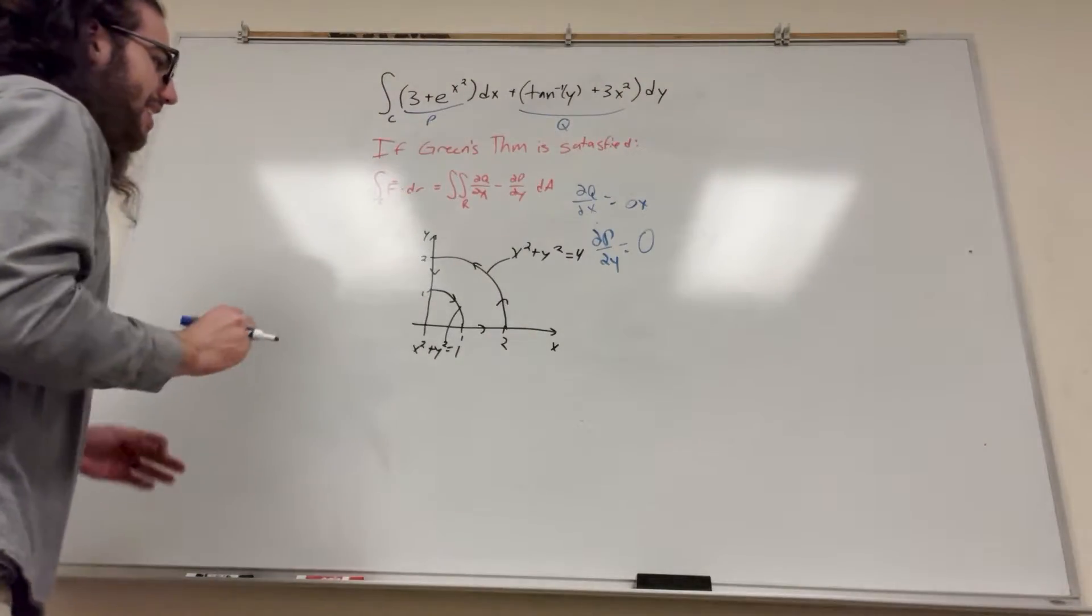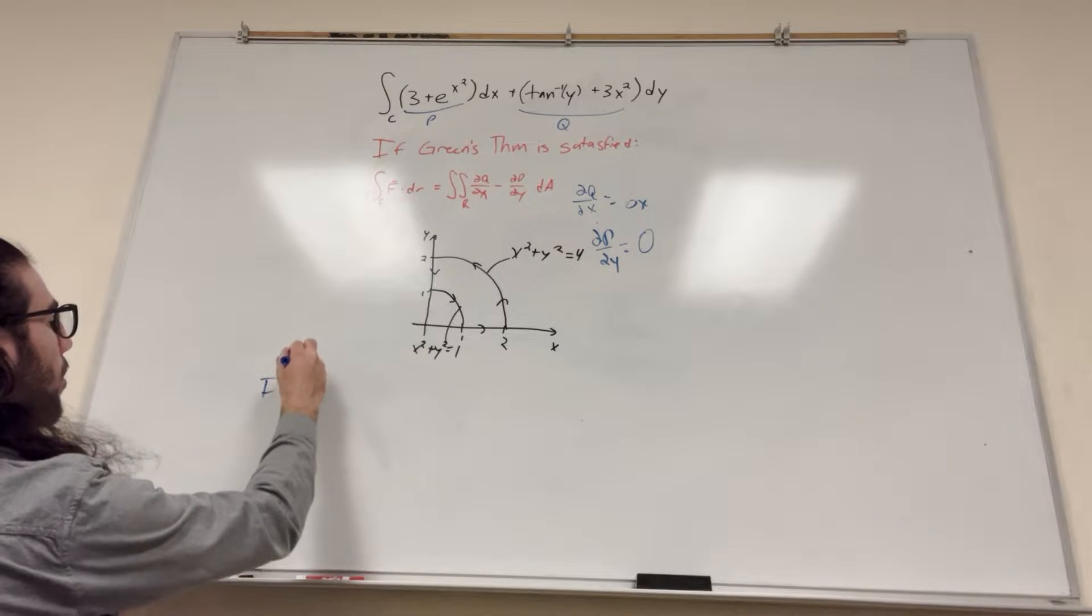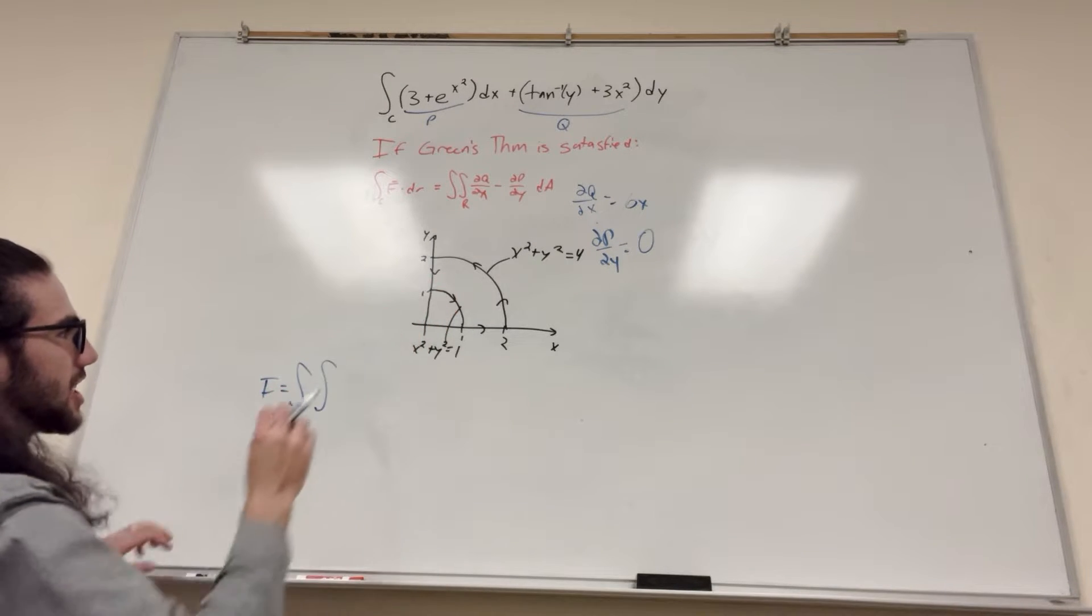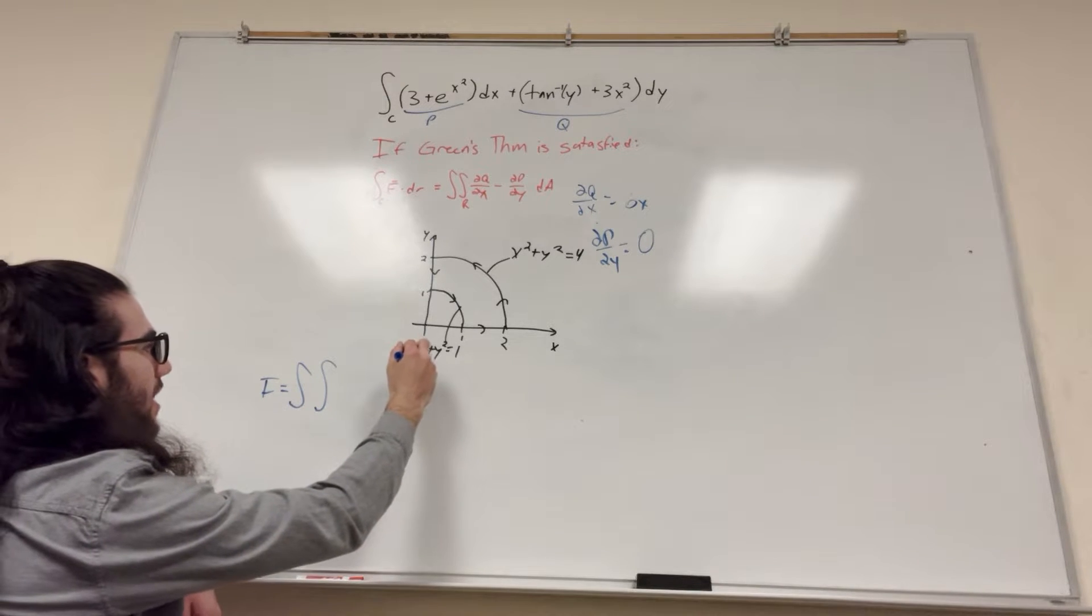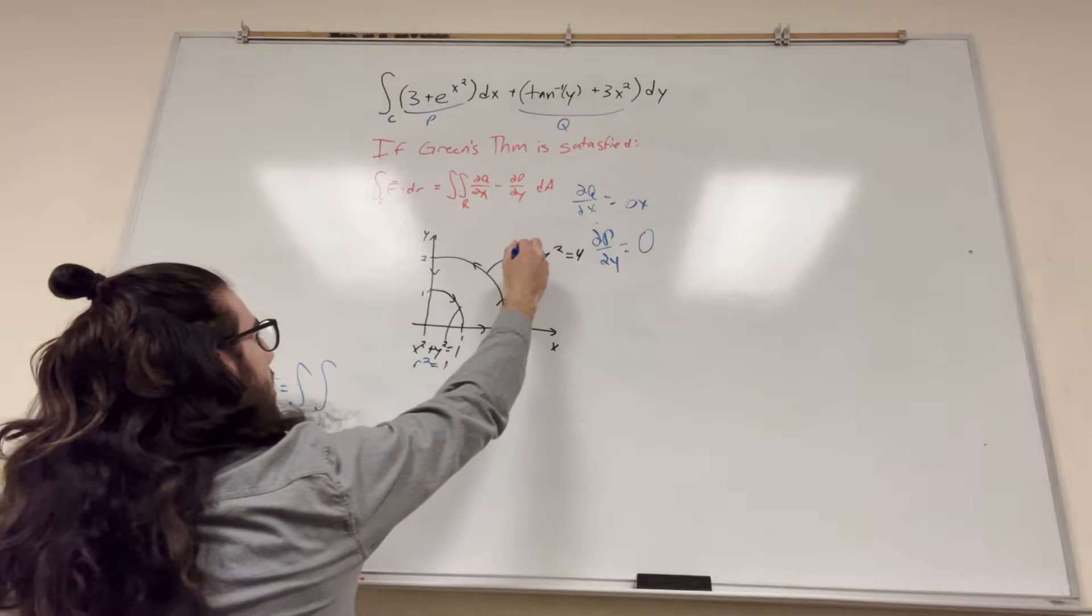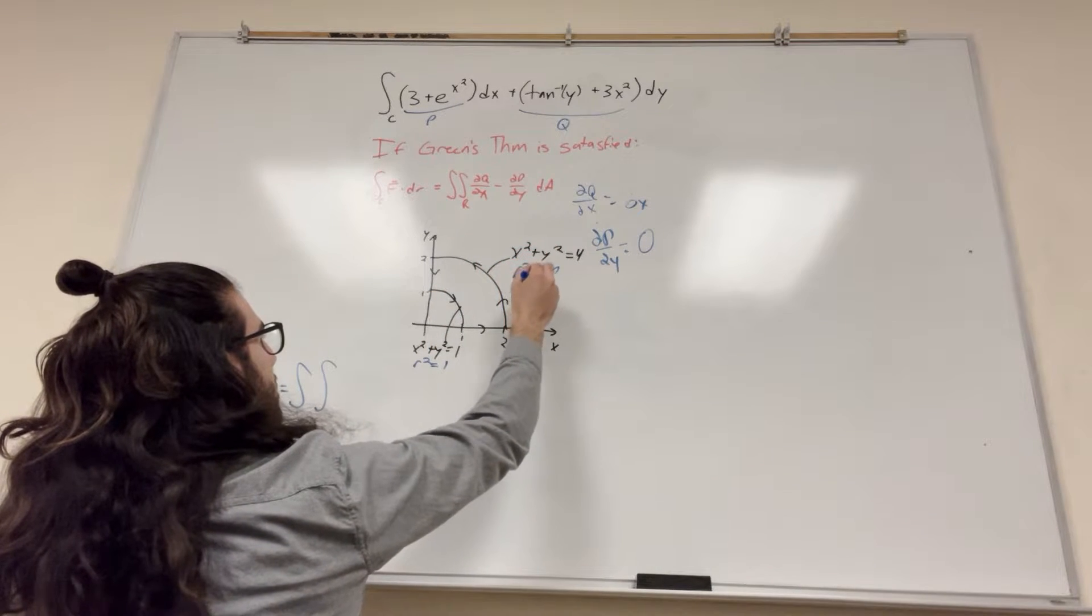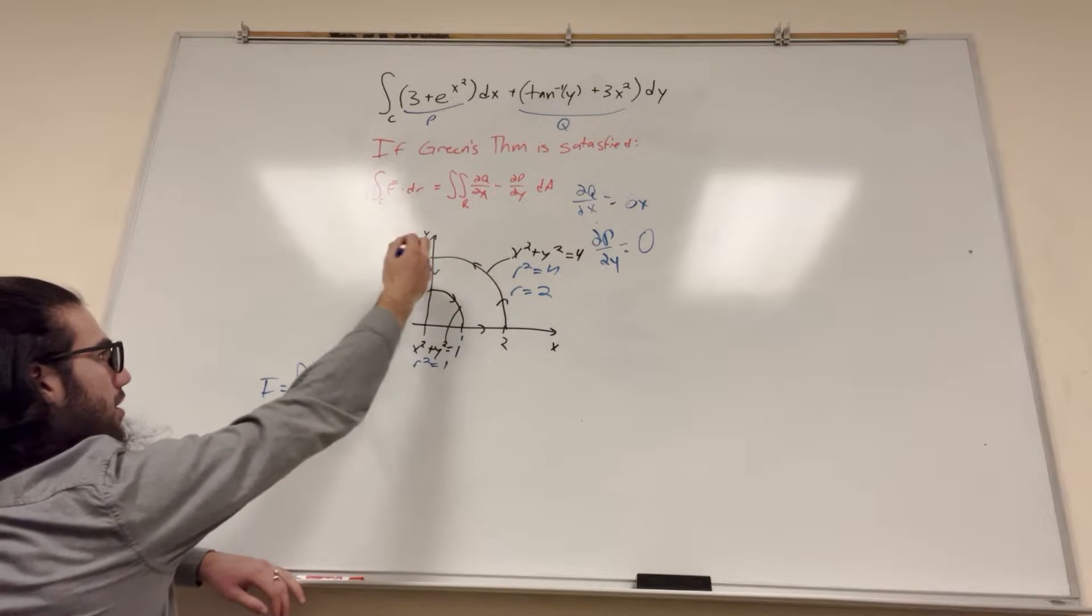Let's set our integral. So I hope you guys know your double integrals by now, converting to polar. Let's look at our region. We can use polar for this, right? It's circular. We have our sphere. This is going to be radius squared is equal to 1, so radius is equal to 1. This is radius squared is equal to 4, so radius is equal to 2. So it goes from radius 1 to 2. And then theta goes from 0 to pi over 2.